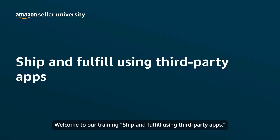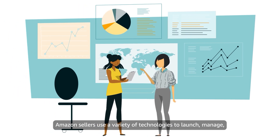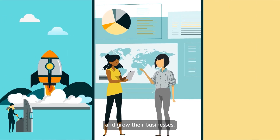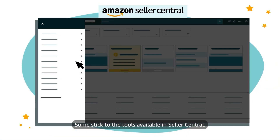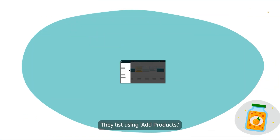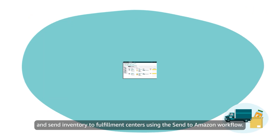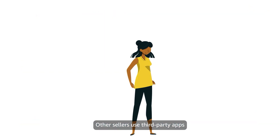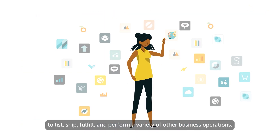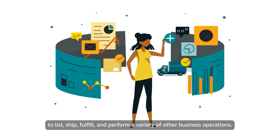Welcome to our training: Ship and Fulfill Using Third-Party Apps. Amazon sellers use a variety of technologies to launch, manage, and grow their businesses. Some stick to the tools available in Seller Central — they list using ad products, ship using Manage Orders, and send inventory to fulfillment centers using the Send to Amazon workflow. Other sellers use third-party apps to list, ship, fulfill, and perform a variety of other business operations.